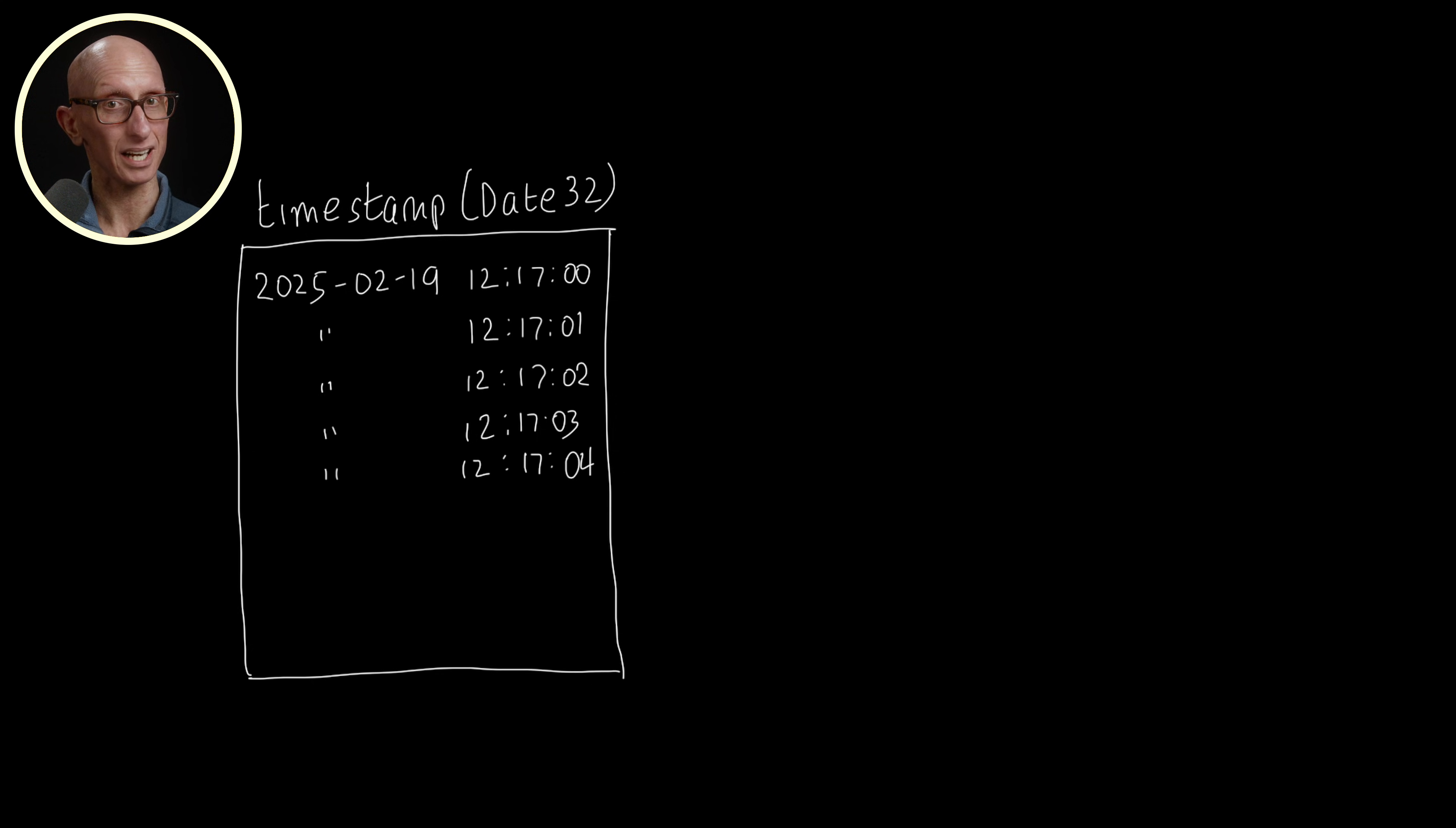But there's a predictability to the data that means we can effectively compress it with the Delta algorithm. The Delta algorithm stores the first value in full, and then after that it stores the diff between values, which will take up way less space.